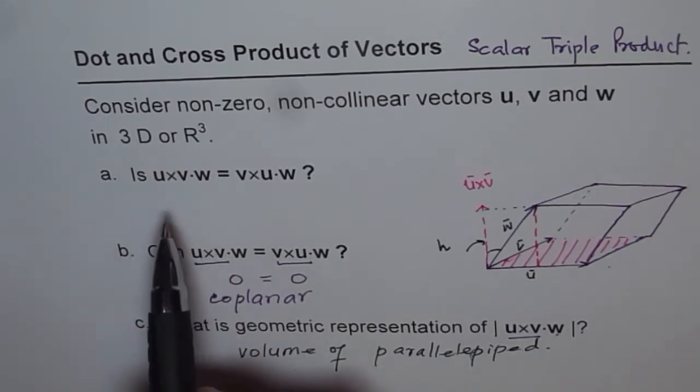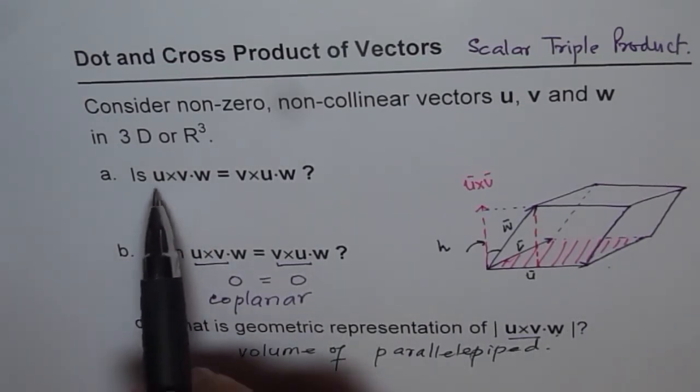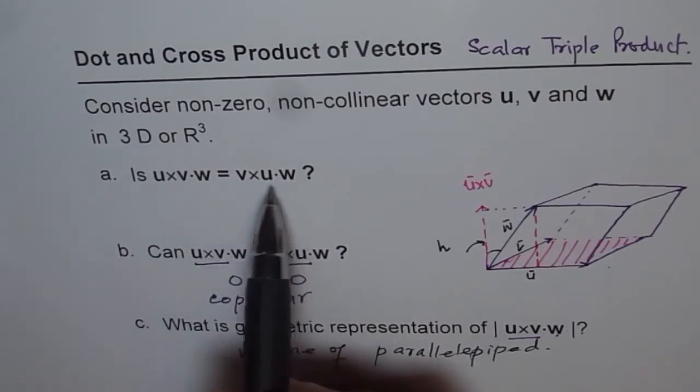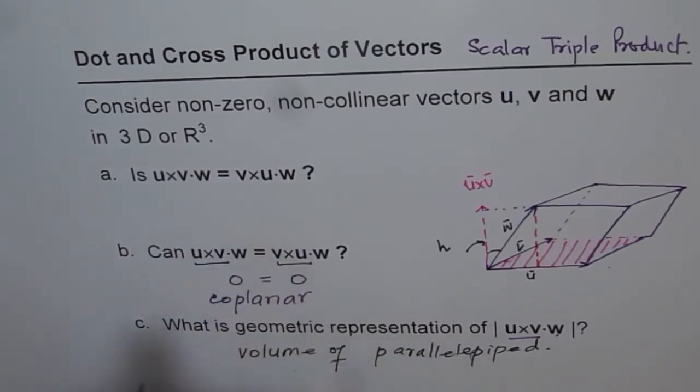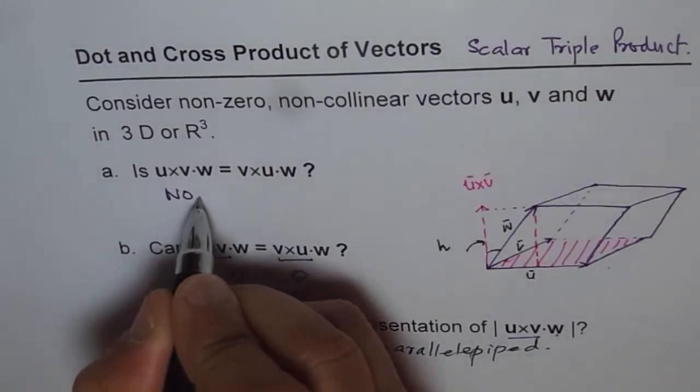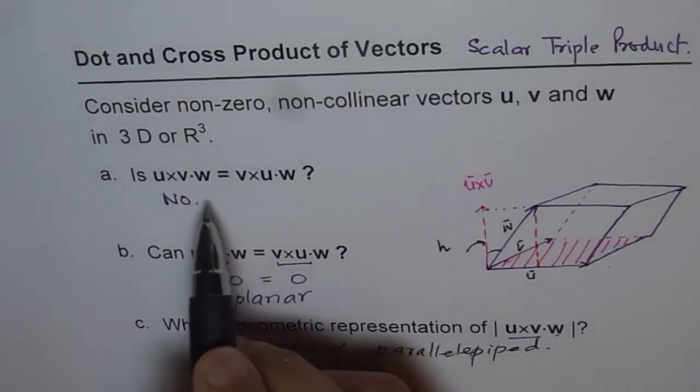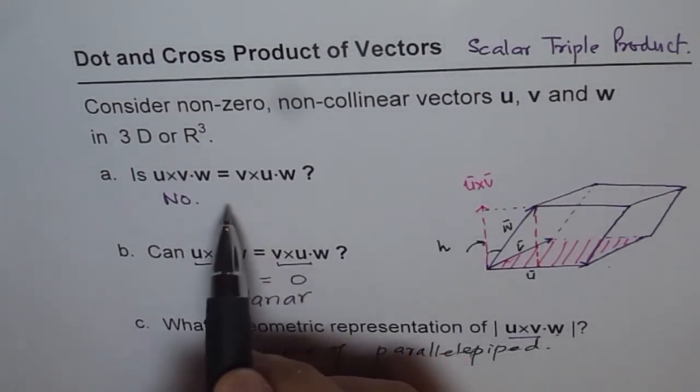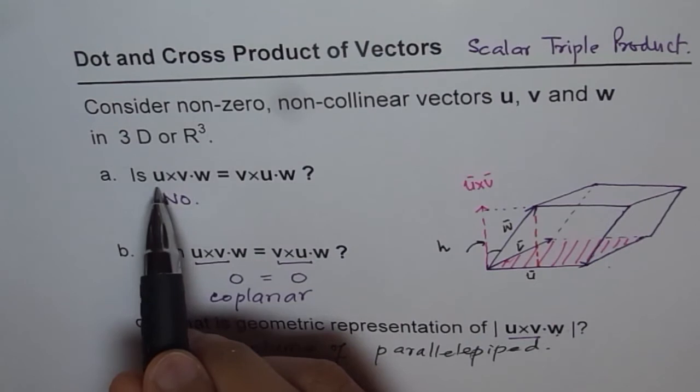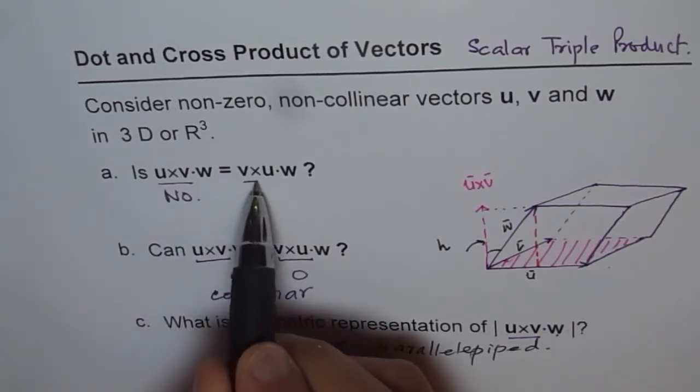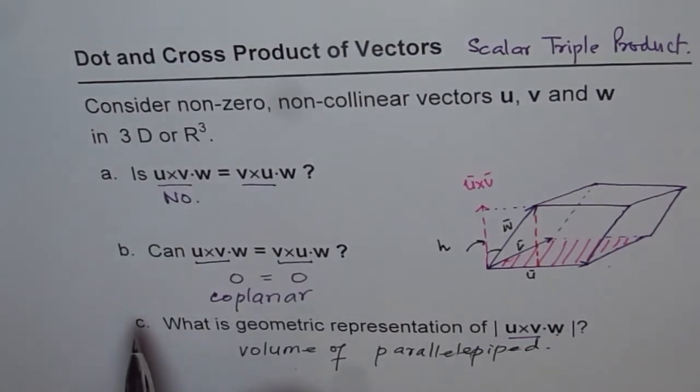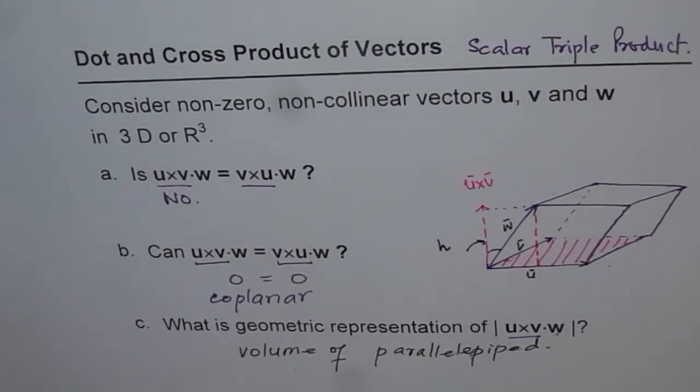And part A is, now it is obvious to you, u cross v dot w equals to v cross u dot w. Is this true? So the answer is no, it is not true. It may be true when they are co-planar, but not otherwise. Otherwise, you will get an answer which will be negative, because the direction of u cross v and v cross u is opposite. So you will get a different answer in both the cases.